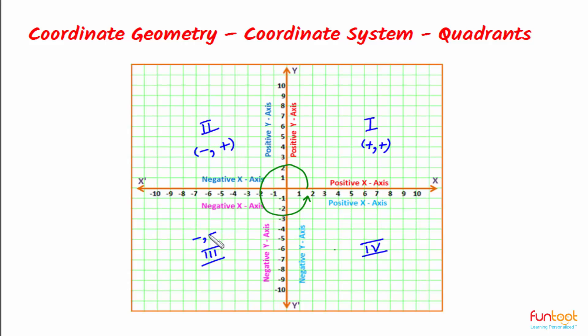In the fourth quadrant, X coordinate is positive and Y coordinate is negative.